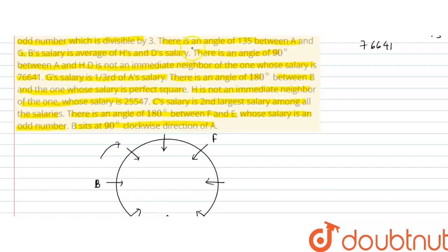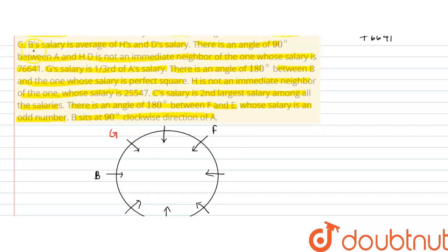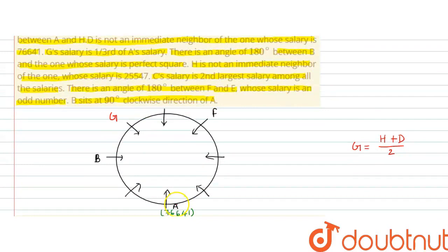There is an angle of 135 degrees between A and G. Since F is already at 135 degrees from A, G is placed at the other 135-degree position from A. B's salary is the average of H's and D's salary. There is an angle of 90 degrees between A and H — B is already there, so H is placed at the other 90-degree position from A. D is not an immediate neighbor of the one whose salary is 76,641, so D's position is determined accordingly.